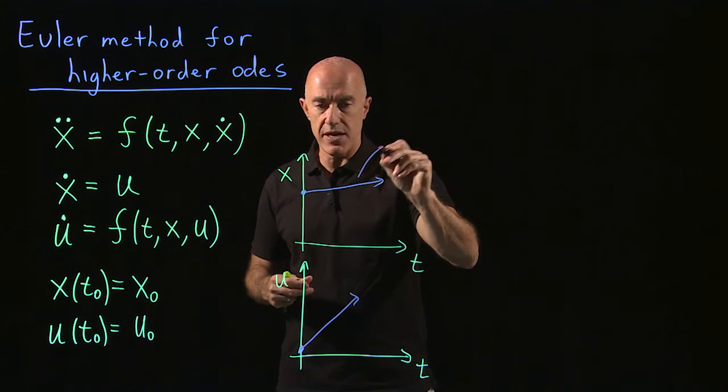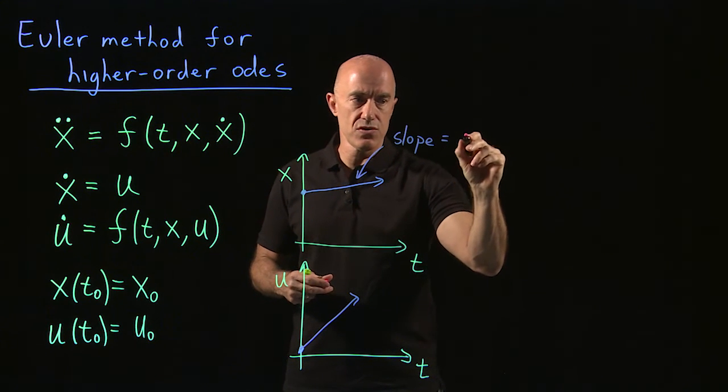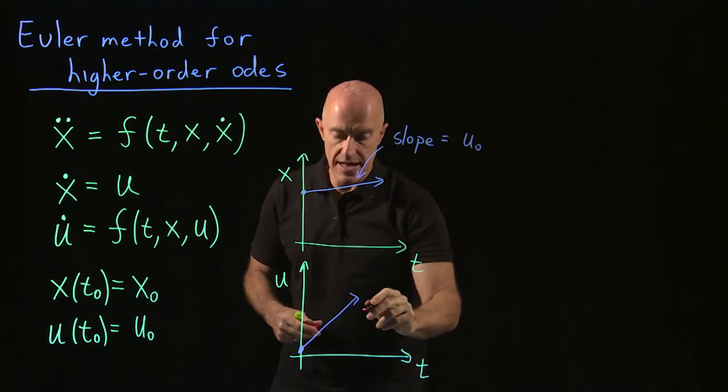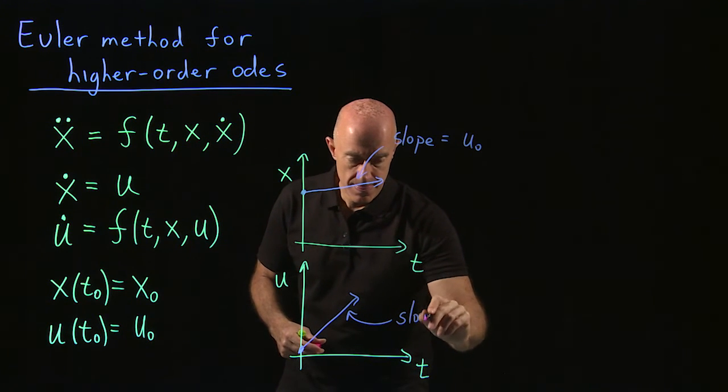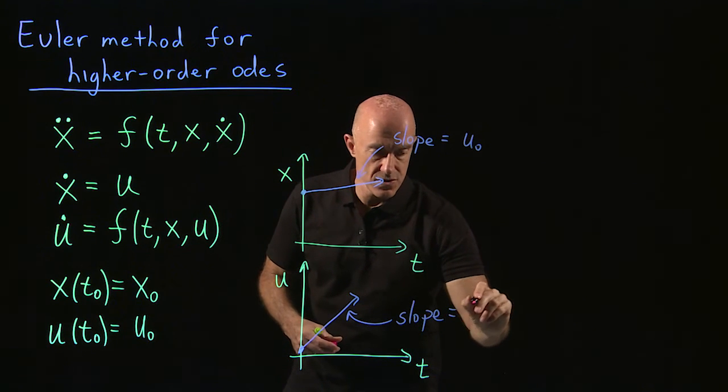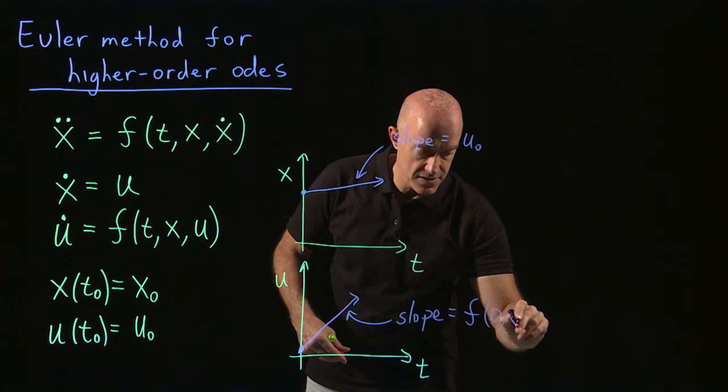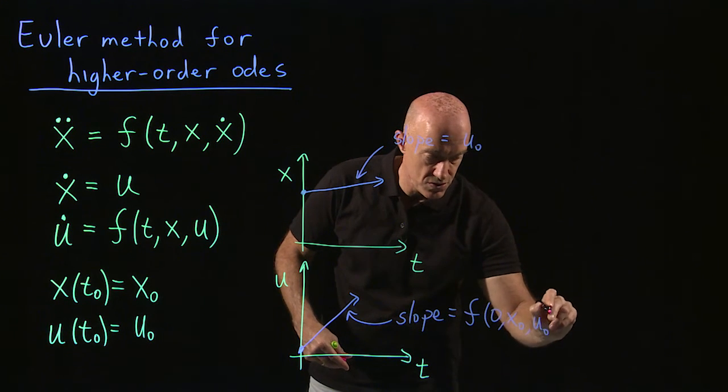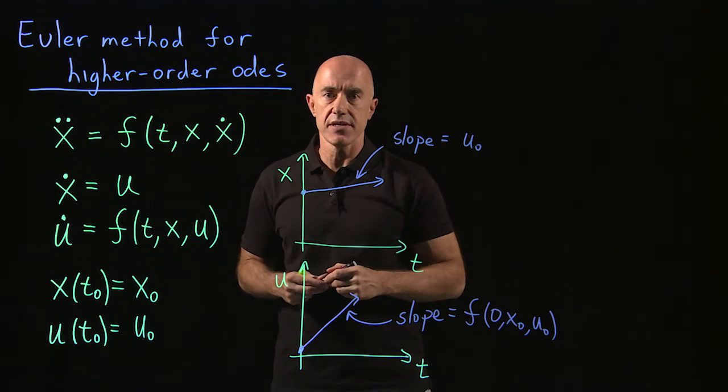So this slope here is equal to u naught. And this slope here is equal to f of t equals zero, x equals x naught, u equals u naught. That's what the differential equation tells us.